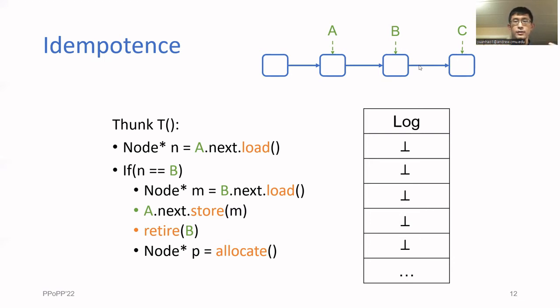To execute the thunk, each process maintains a pointer to the current instruction and also a pointer to the current location in the log.